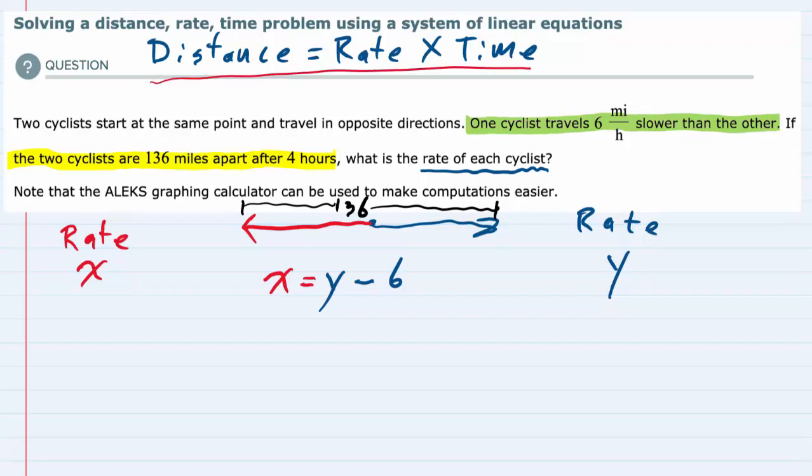And knowing that distance equals rate times time, the first cyclist here, the red one, he's going x miles per hour and it's been 4 hours. So he has traveled x miles per hour times 4. So he has gone x times 4.